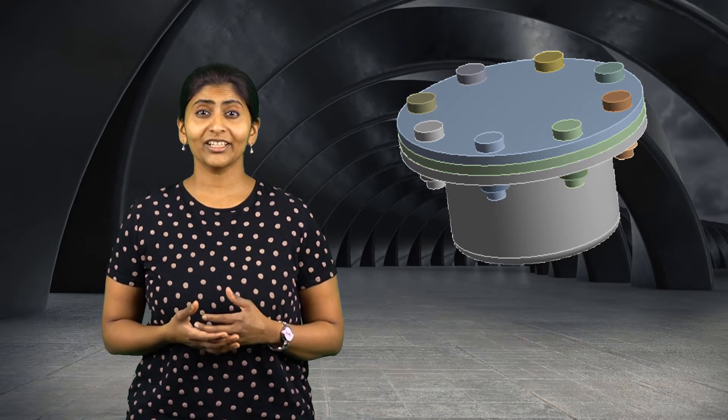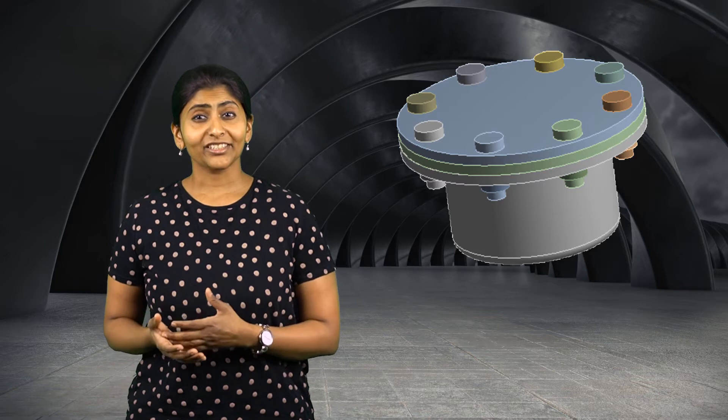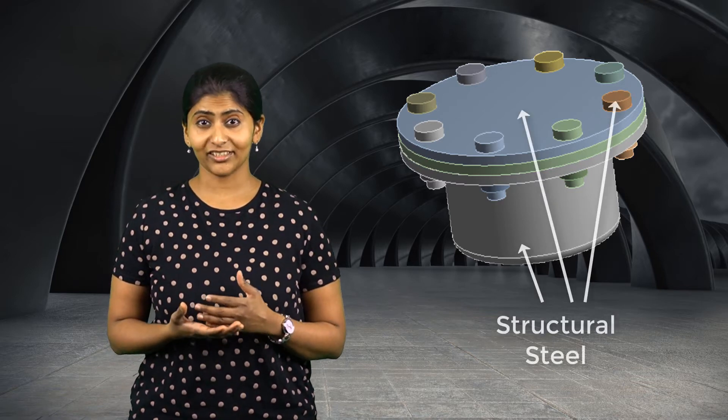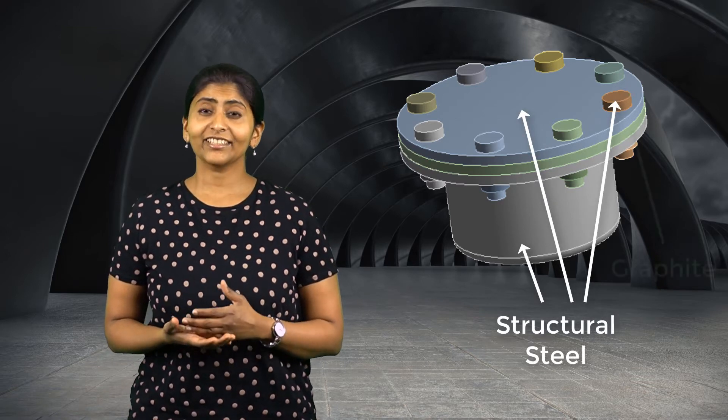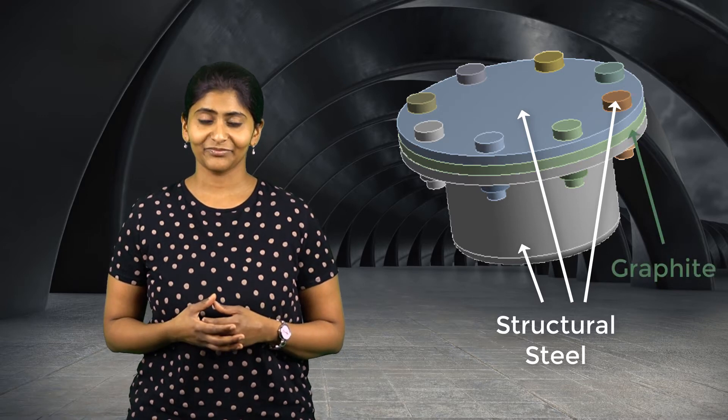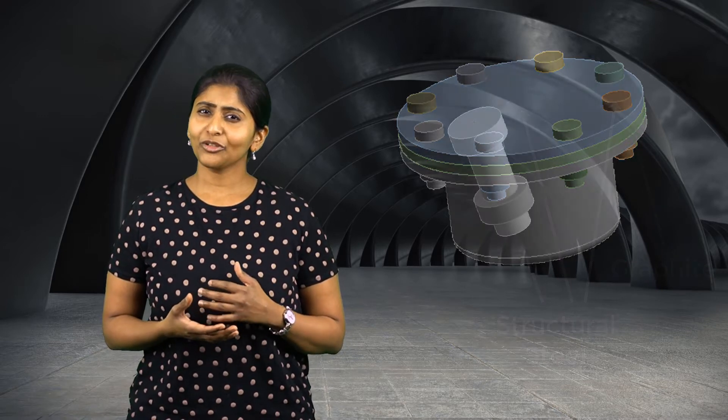Here's the new design. It has 8 bolts of same dimensions. As you can see, the bolts are modelled as solid bodies with circular heads. The pressure vessel and the fasteners are made of structural steel and the gasket is made of graphite material. The threads are not of interest, so we simplify the threaded portions and use bonded contacts between the nut and the bolt. We use frictional contacts between all other mating parts.